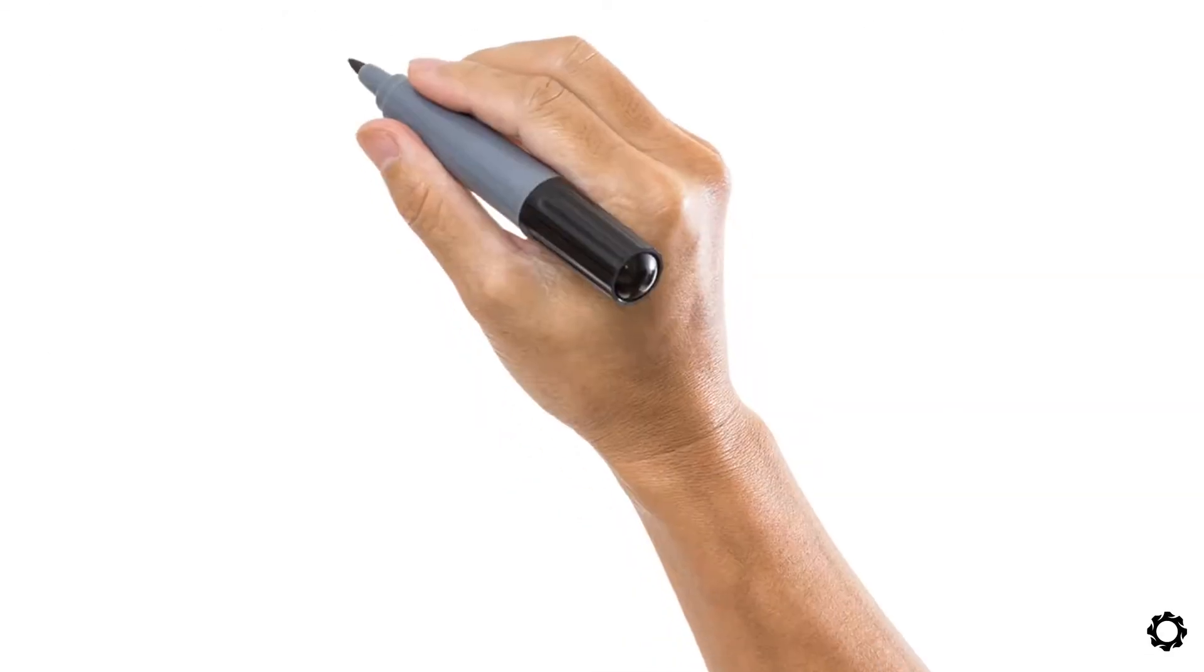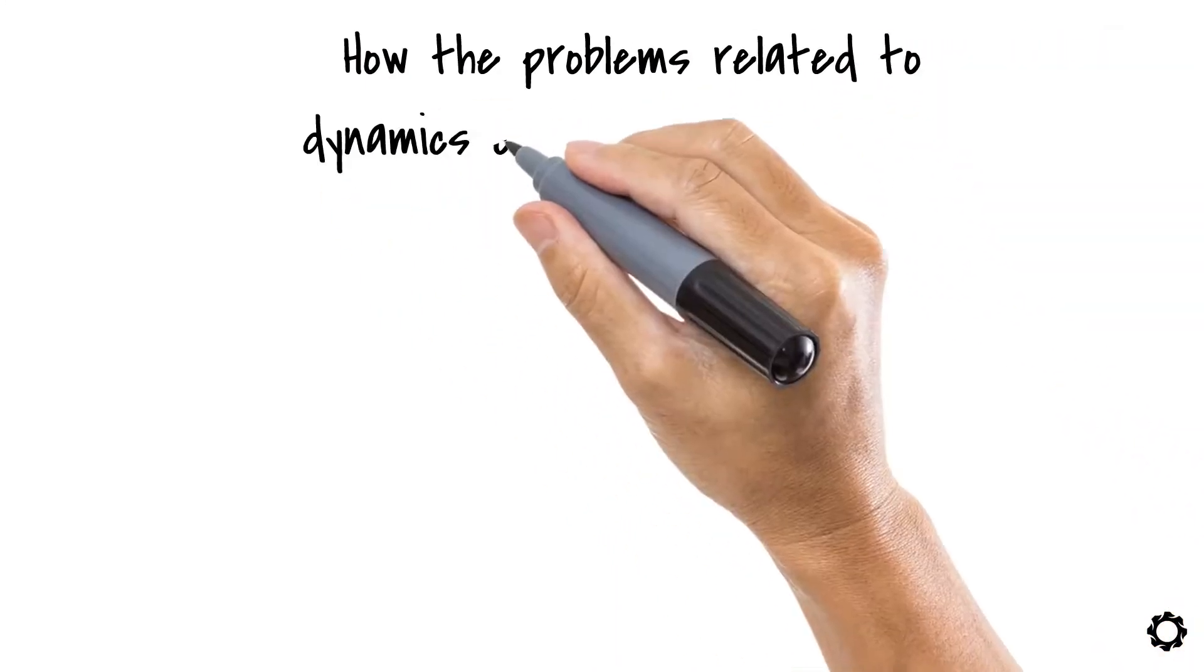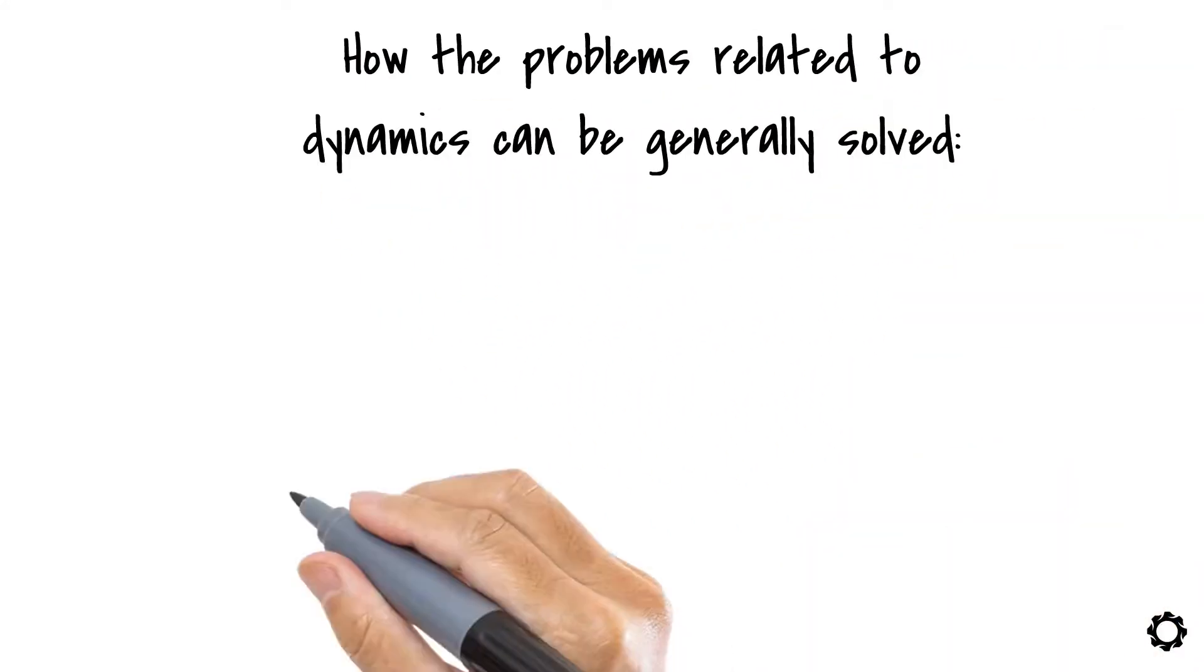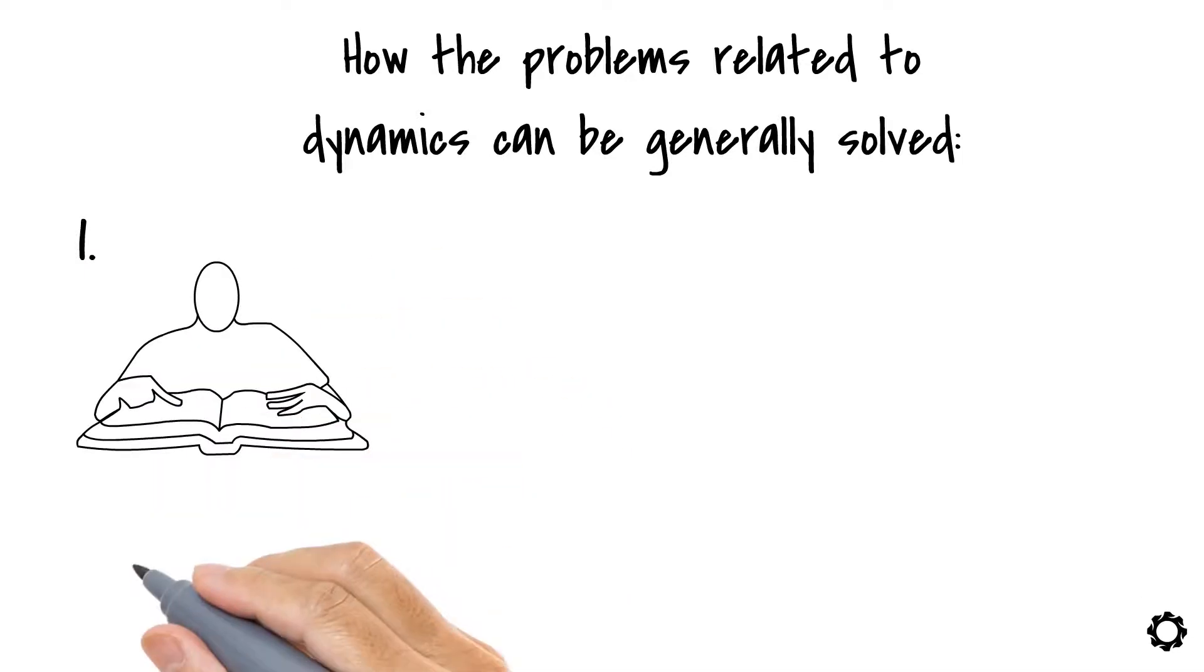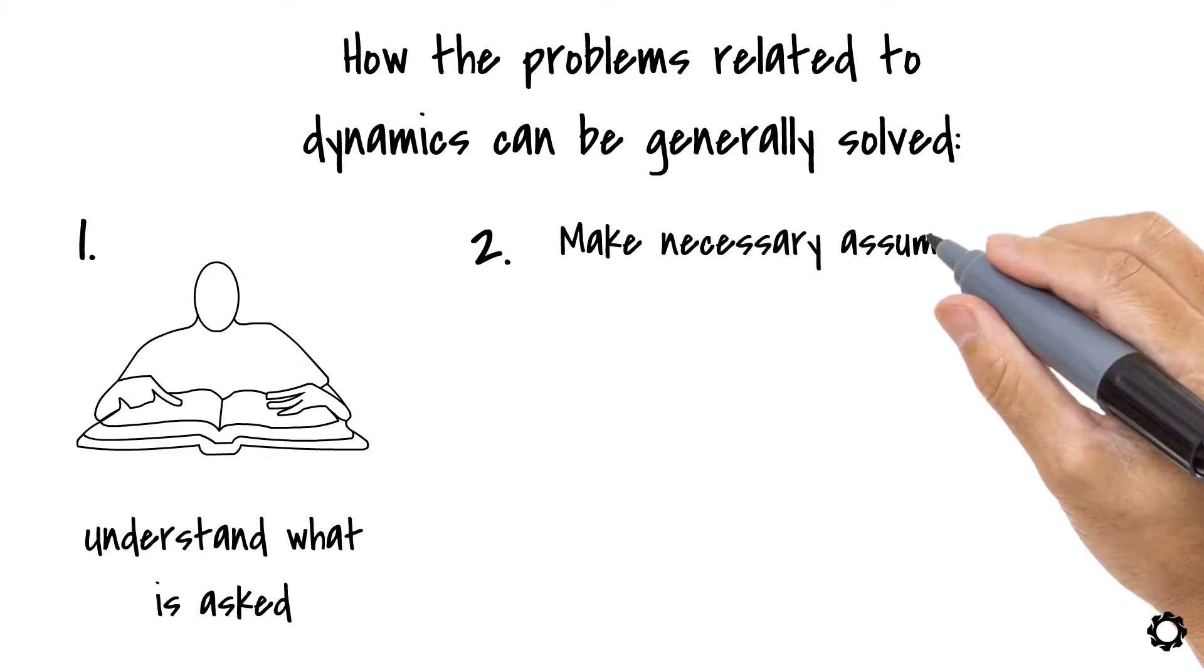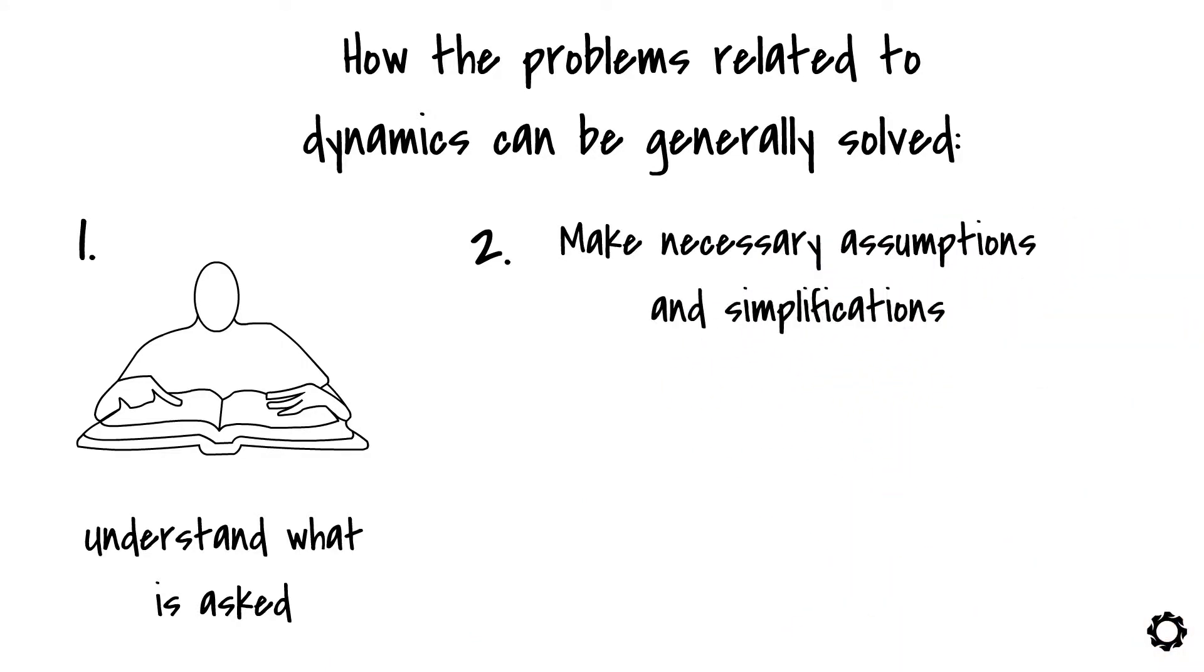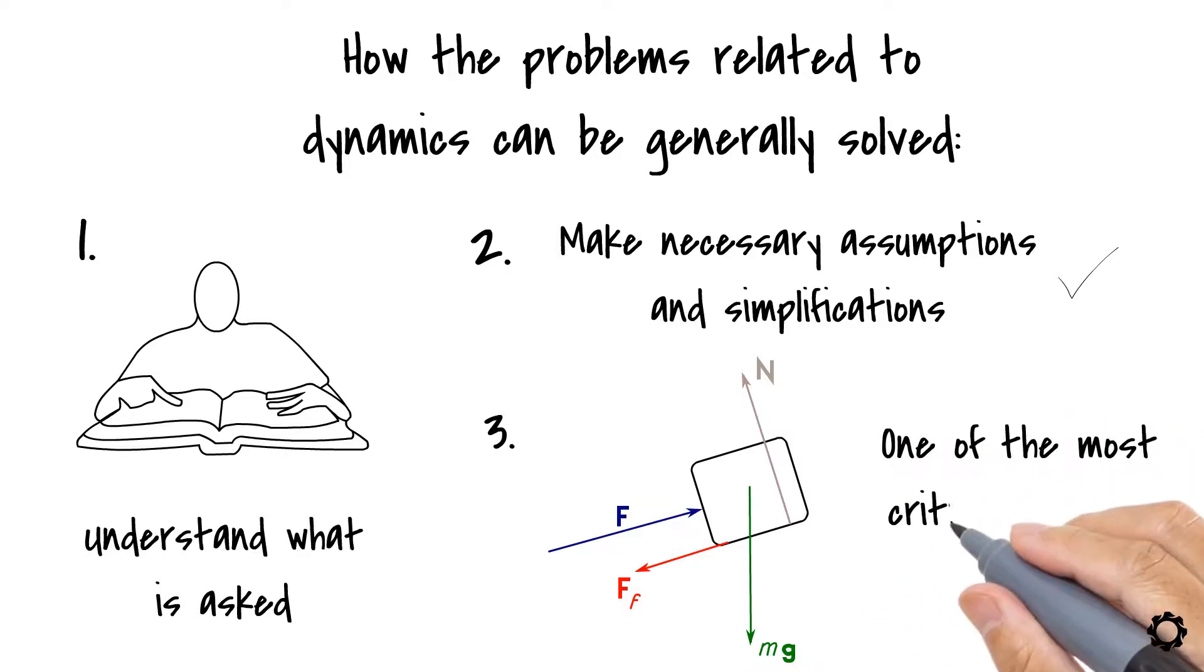Let's see now how the problems related to dynamics can be generally solved. The first thing that you should do is to read the problem carefully so that you understand what is asked and then make necessary assumptions and simplifications. After you have done this step, move on to drawing the free-body diagram of the system under investigation. Note that this is one of the most critical aspects.